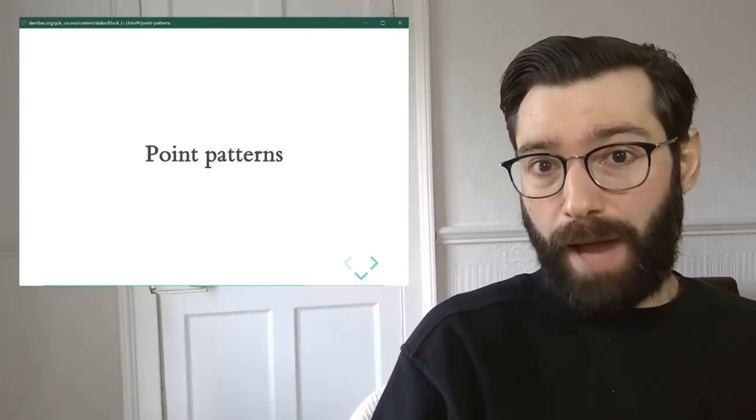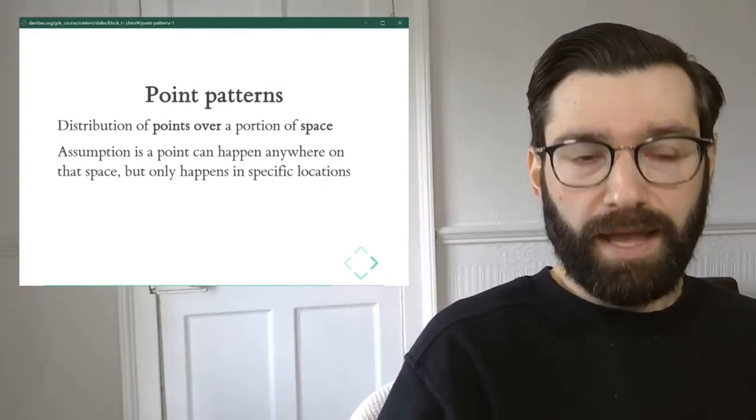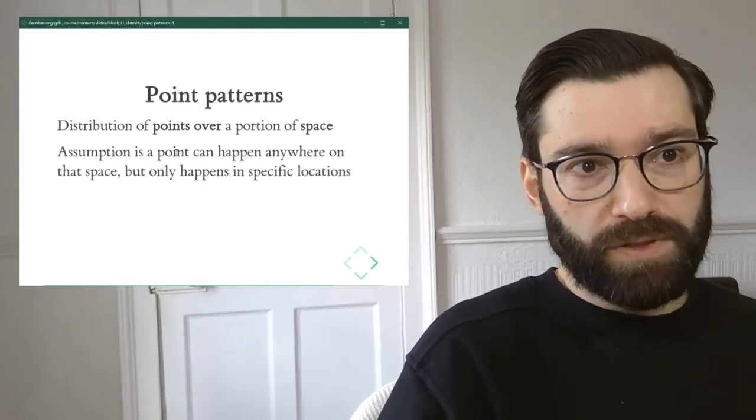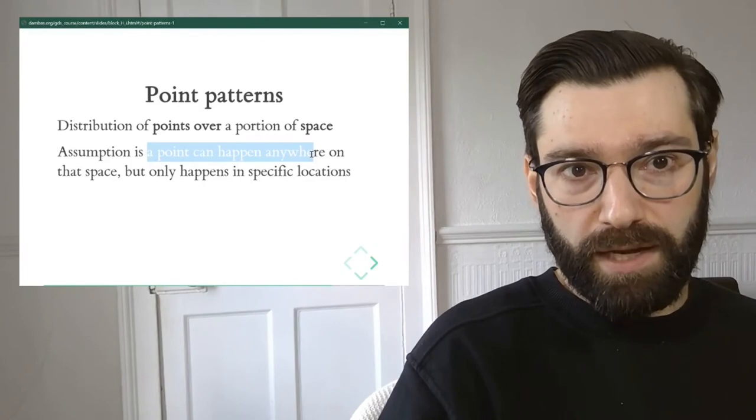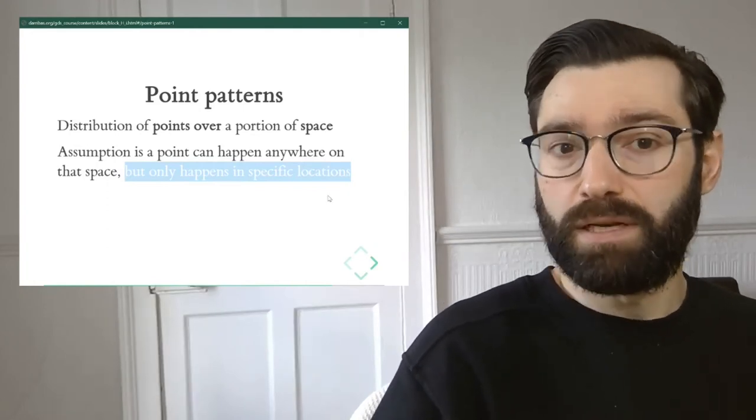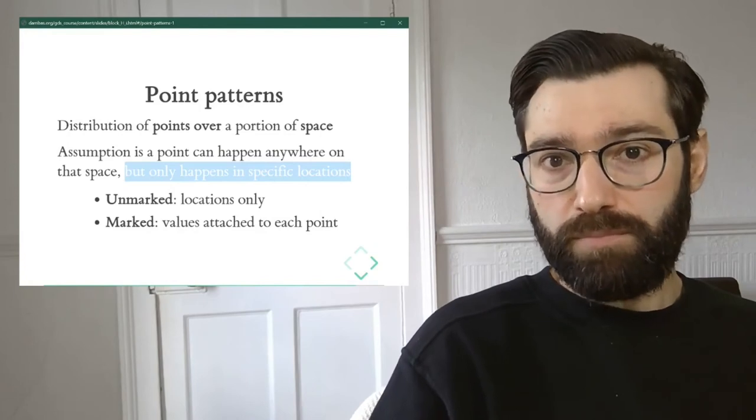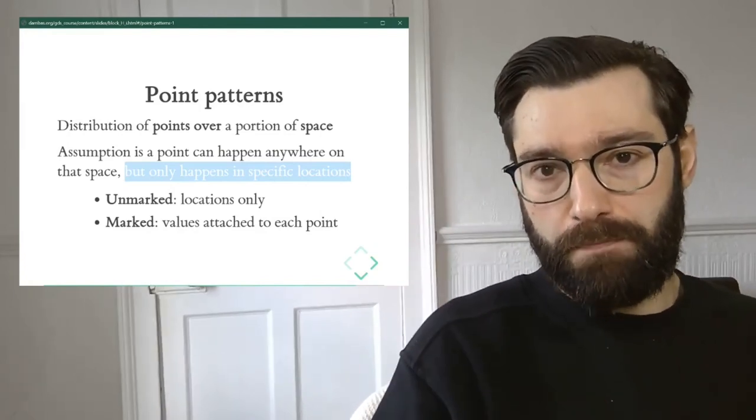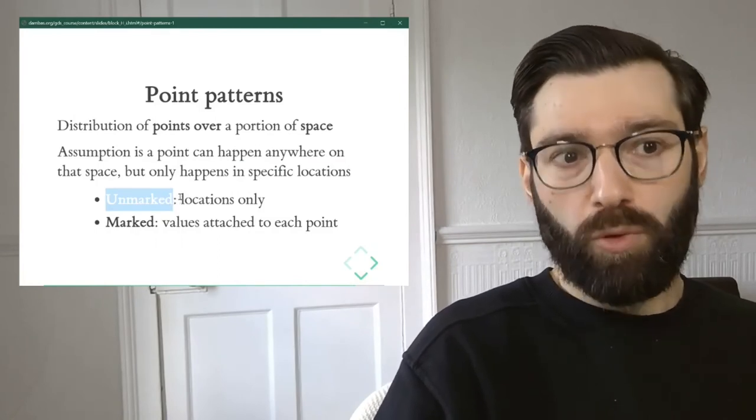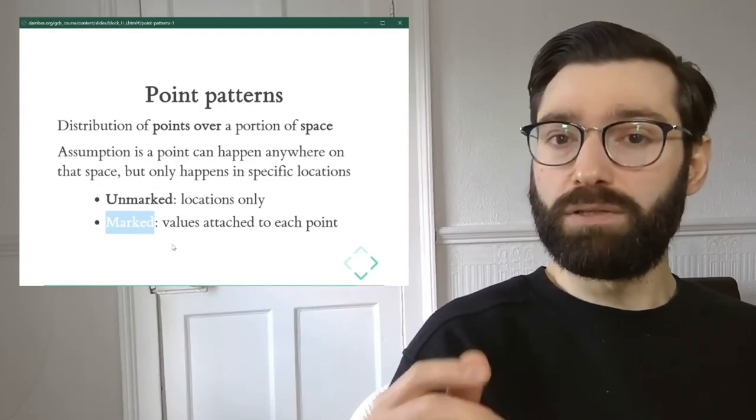This gives rise to this term of point patterns, a collection of points that is understood as a series of events, points that happen only in certain locations. And point patterns studies the distribution of points over a portion of space. The key assumption here is that a point can happen anywhere in the geography that we're studying. But actually, in reality, it's only observed in certain locations. And point patterns, or collections of these types of points, usually are classified at least in two different types. One is unmarked point patterns, and this is what we're going to spend most of our time in this block, where we only record locations, or marked point patterns, where we record the location of the event, but also we attach certain characteristics.